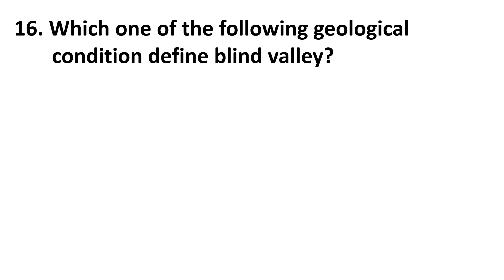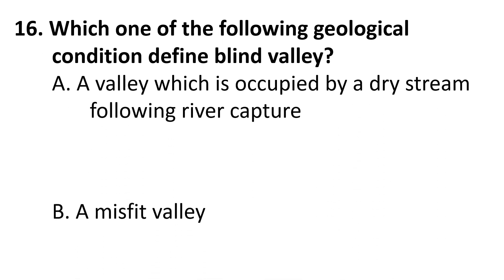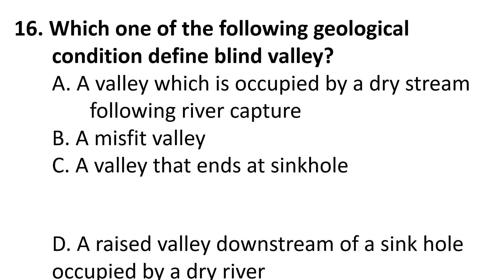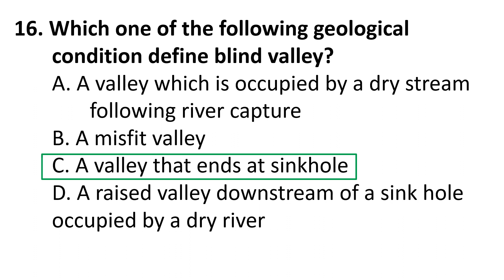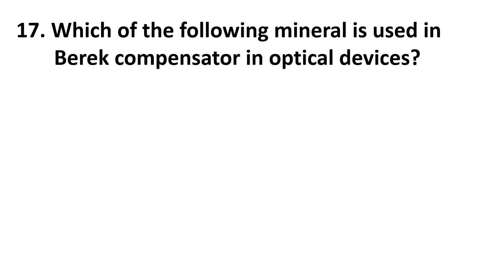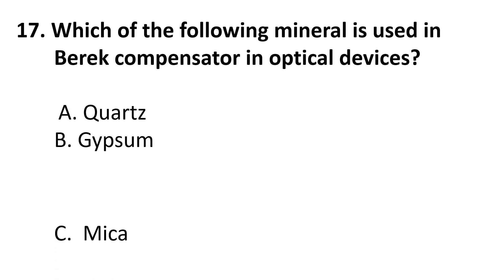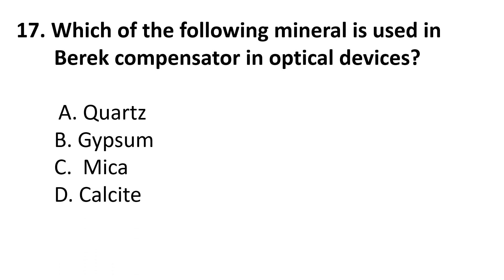Sixteenth question: Which one of the following geological conditions defines a blind valley? Choices: A) A valley occupied by a dry stream following river capture, B) A misfit valley, C) A valley that ends at a sinkhole, D) A raised valley downstream of a sinkhole occupied by a dry river. The correct answer is C. Seventeenth question: Which mineral is used in a Biot compensator in optical devices? Choices: A) Quartz, B) Gypsum, C) Mica, D) Calcite. The correct answer is D, Calcite.